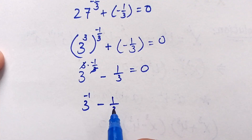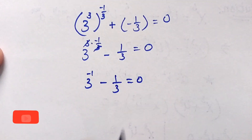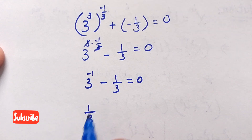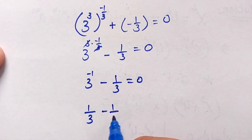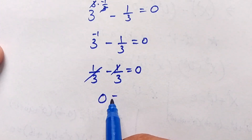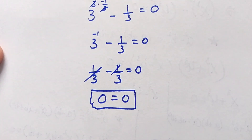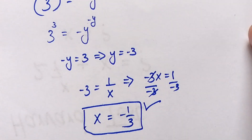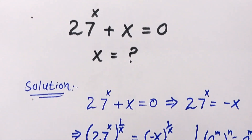We know that 3 to the power of minus 1 is equal to 1 over 3, so 1 over 3 minus 1 over 3 is equal to 0. So 0 equals 0, which shows that the left-hand side and the right-hand side are equal. Therefore, x equals minus 1 over 3 is the correct answer to this interesting question. Thank you for watching, please subscribe to the channel. Thank you, bye bye.